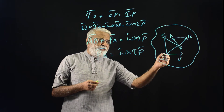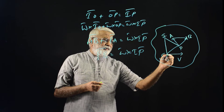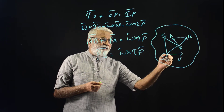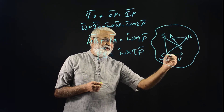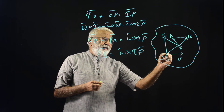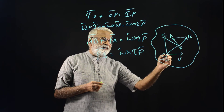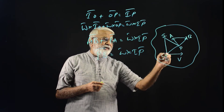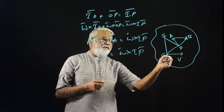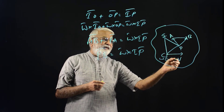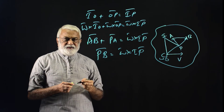We find the instantaneous axis this way. At point O, velocity due to rotation is zero, so the velocity of O is only V. And V must be at right angles to the line joining O with the instantaneous axis. So if we draw a perpendicular, the distance IO will be V divided by Omega. If we know V and Omega, we know IO.